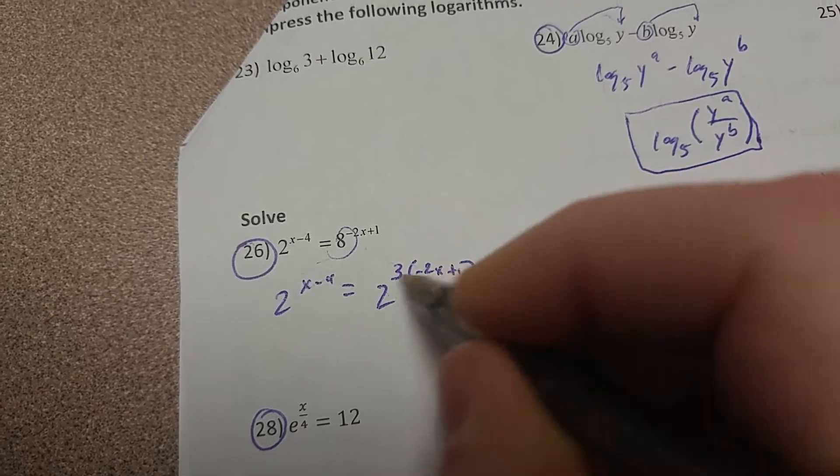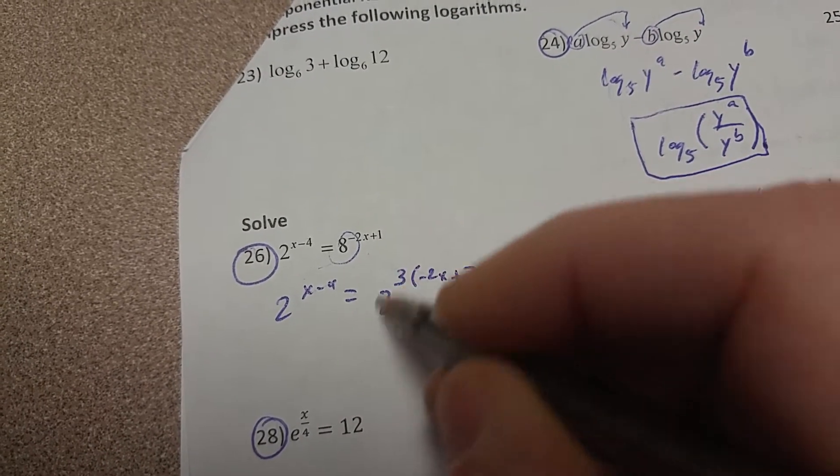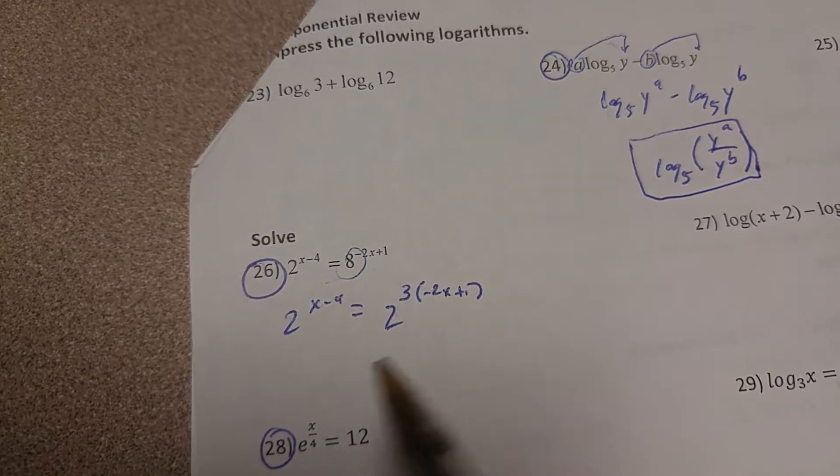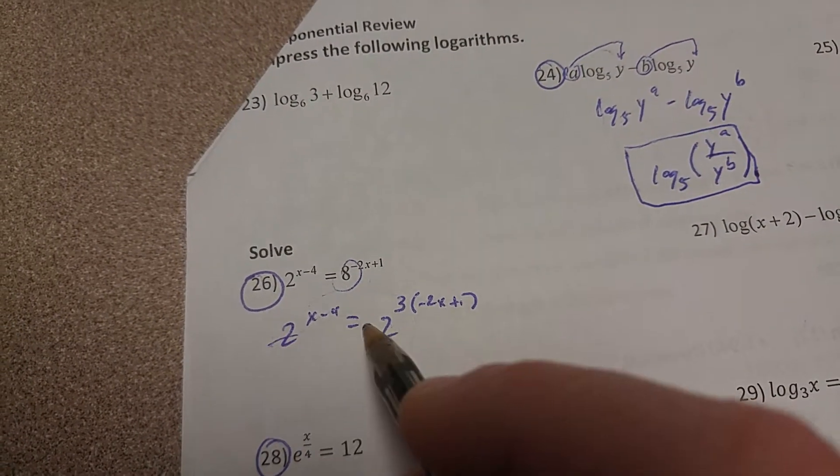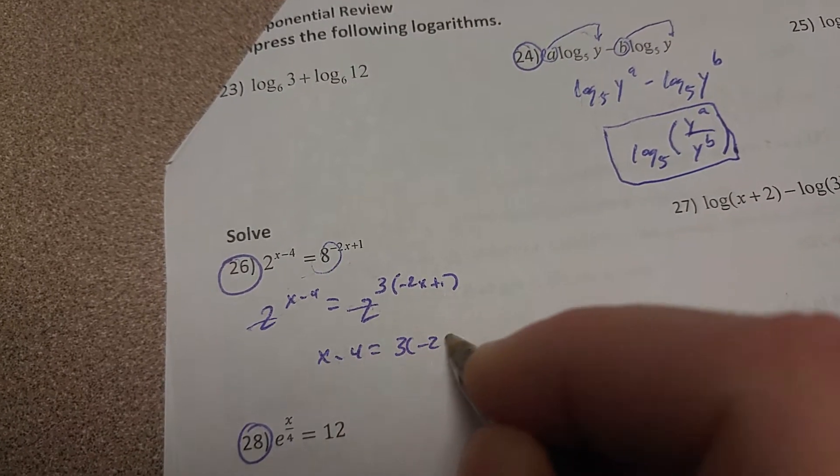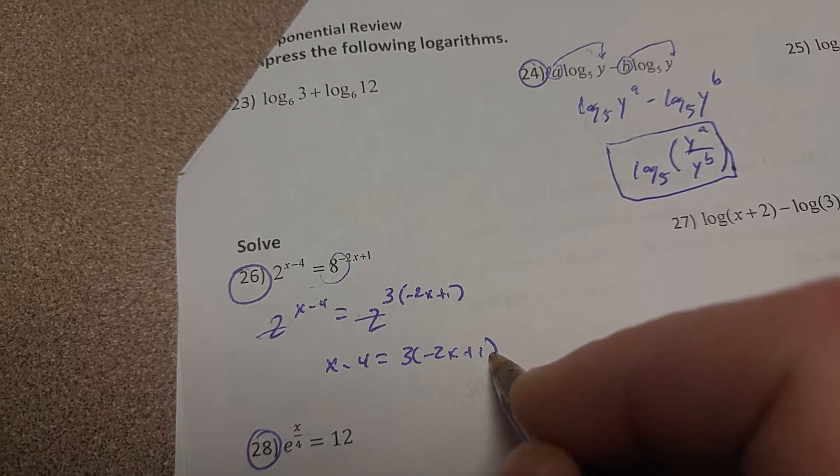But I still have other exponents up there, right? So I rewrite 8 as 2 cubed, but then I've got these other exponents that I have to put with that 3. So now that my bases are the same, I can ignore my bases and set x minus 4 equal to 3 times negative 2x plus 1.